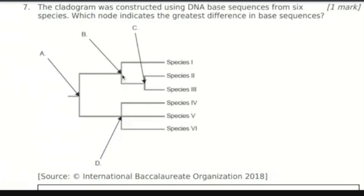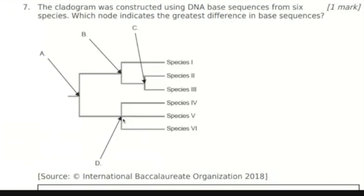These points here are the nodes: A, B, C, and D — the four possible nodes. Nodes are the places where an ancestor gives rise to different groups. Here, an ancestor gives rise to three different groups, and another ancestor gives rise to two different groups.